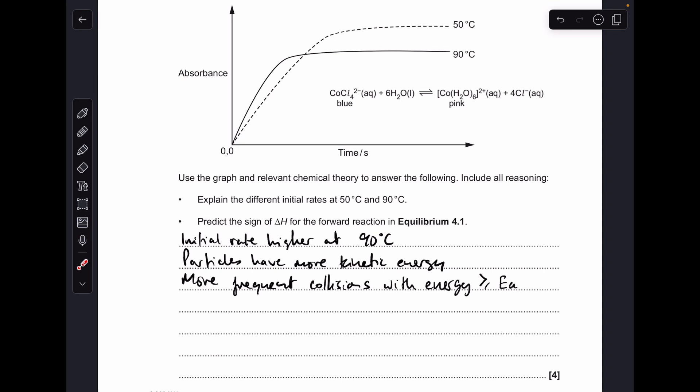Moving on to the other thing, we've got to talk about the sign of delta H for the forward reaction, so I've just pasted the equilibrium there. If you have a look at the lower temperature, you can see that over time it ends up at a higher absorbance, so that means there's a higher concentration of this Co(H2O)6^2+ because we were told above that the absorbance is linked to the concentration of that.